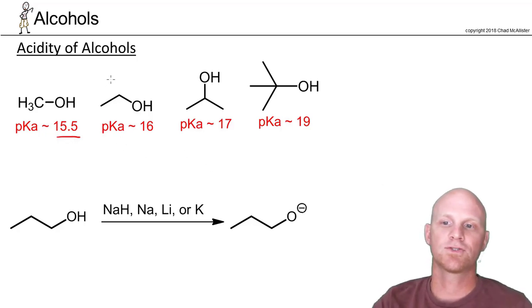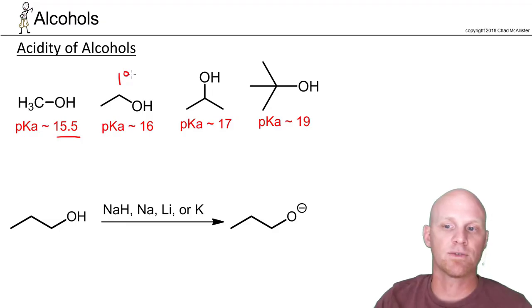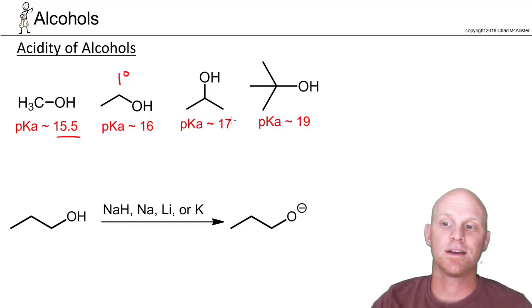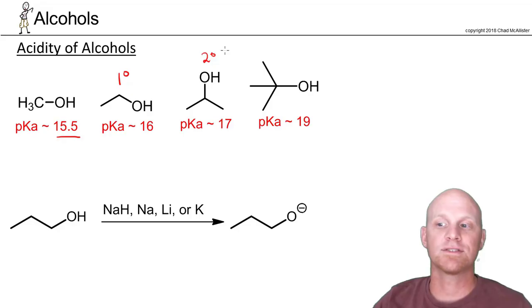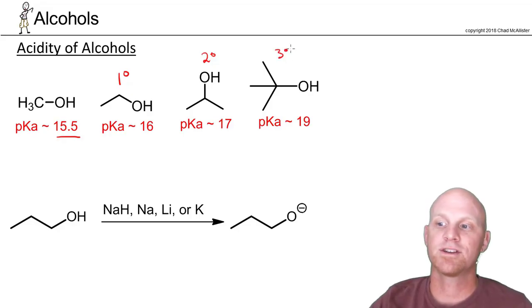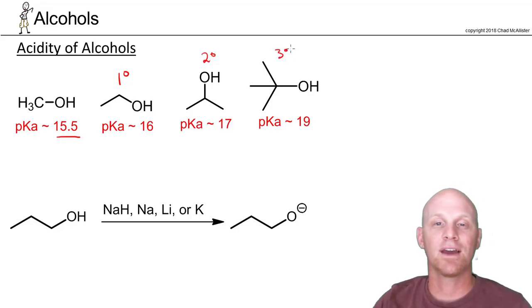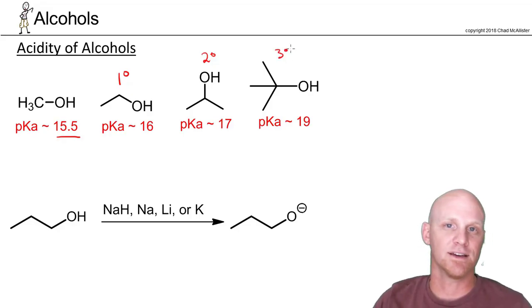If you go to a primary alcohol instead of methanol, the pKa goes up to 16. Go to a secondary alcohol, pKa goes up to 17. Go to a tertiary alcohol, and the pKa goes up to 19.